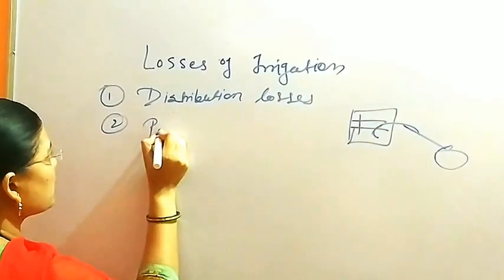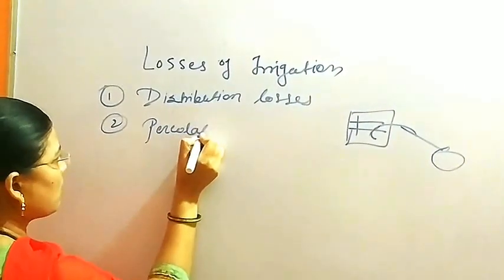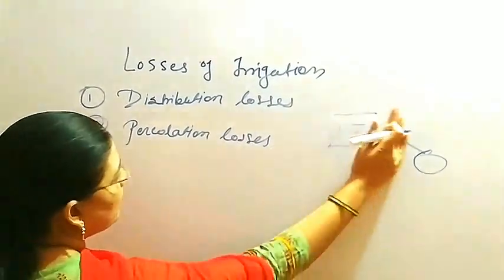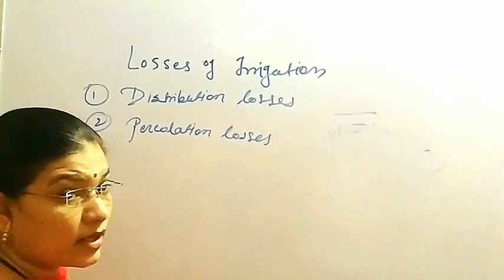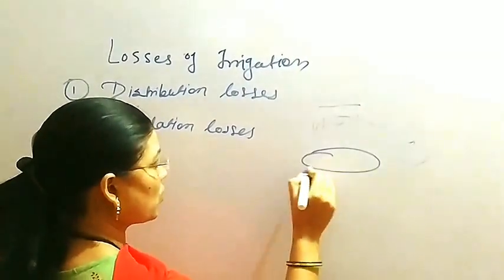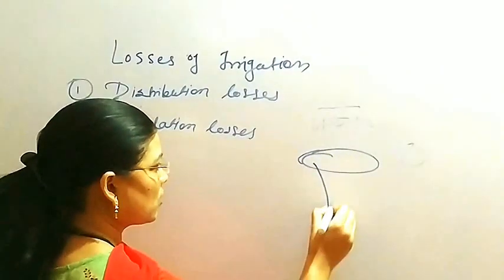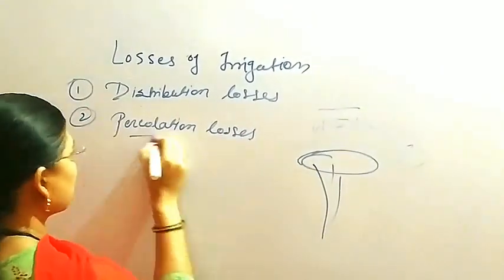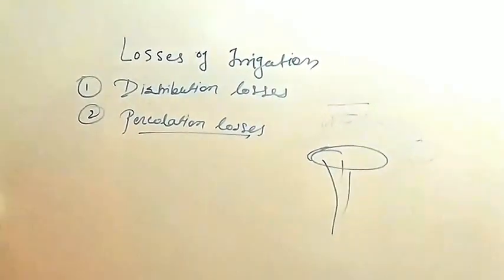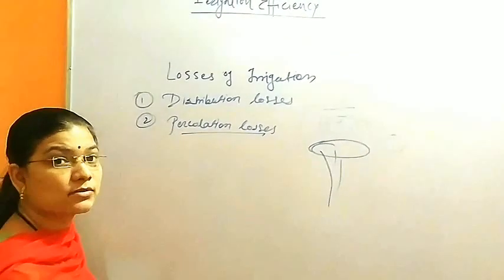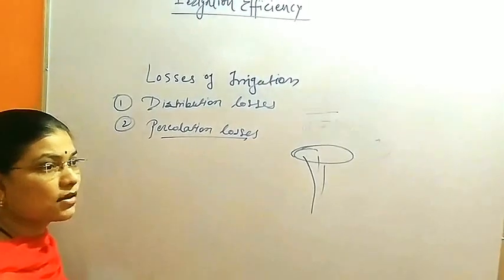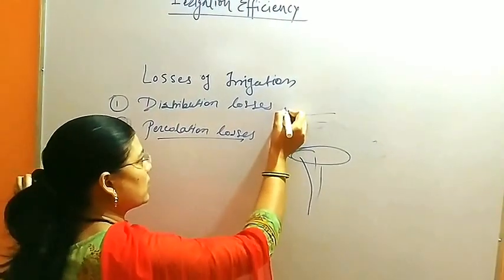The second one is percolation losses. After application, water is stored in the root zone, but water that percolates beyond the root zone is called percolation losses. About only 10 to 20 percent of water is actually utilized by the plant for its growth; the rest is lost through various losses.